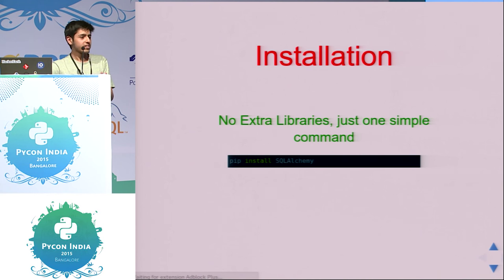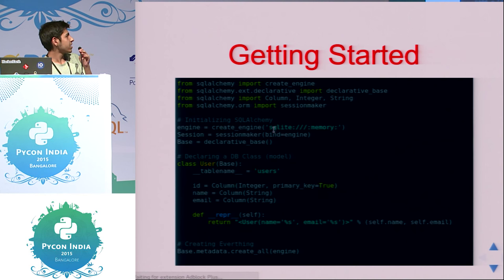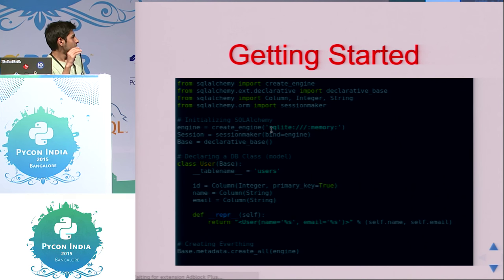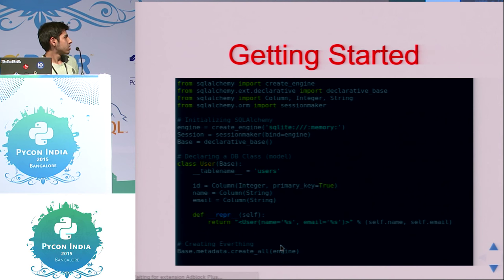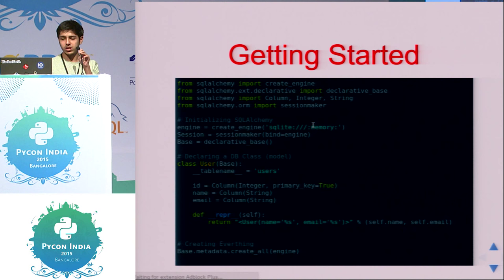If you are interested in SQLAlchemy, it's very simple to start — just pip install SQLAlchemy. The engine part works with all the relational databases: Oracle, SQLite, Postgres, MySQL. Here's a quick example: a class User with a table name user and three columns — ID, name, email. When you do base.metadata.create_all(engine), if you have multiple classes like this, this command creates all the tables in whatever database you specify. It's very clean and much easier to handle.